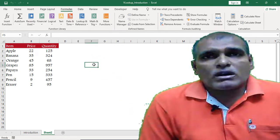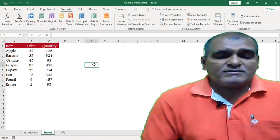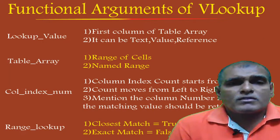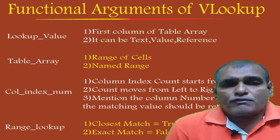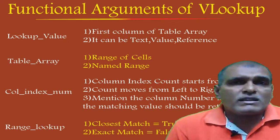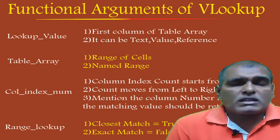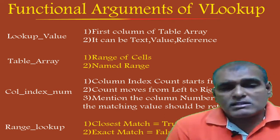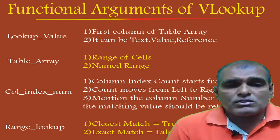Now let us have a look at the functional arguments of the VLOOKUP function. This VLOOKUP function consists of four functional arguments. The first one is lookup value, the second one is table array, the third one is column index number, and the fourth one is range lookup.